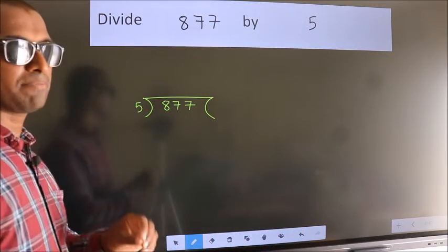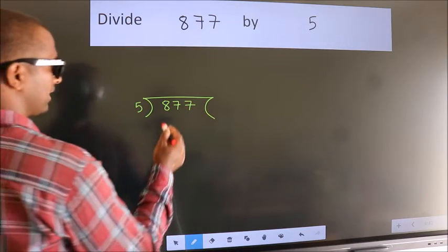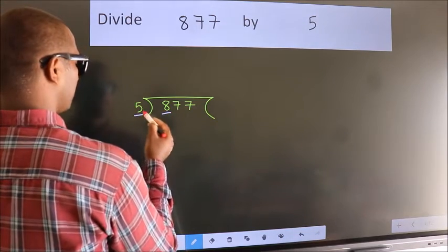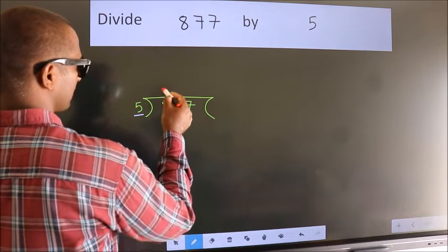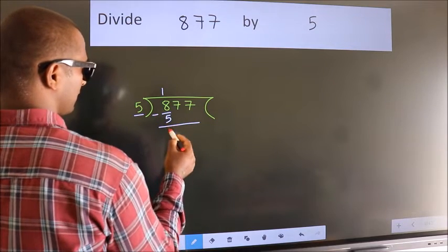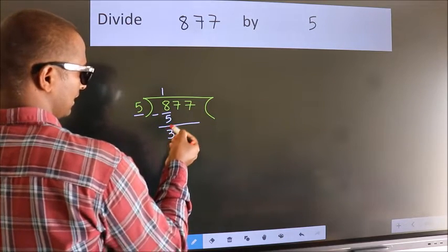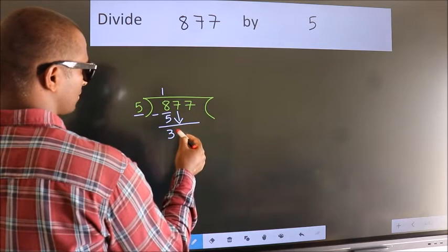This is step 1. Next, we have 8 here. A number close to 8 in the 5 table is 5 times 1 equals 5. Now we subtract and get 3. After this, bring down the next number, so 7 down.